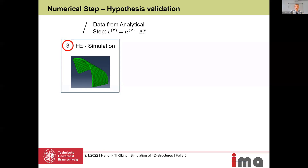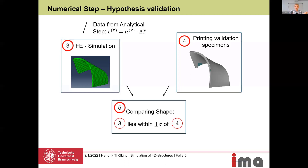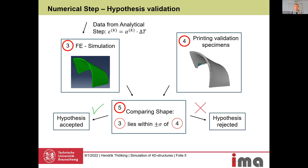In our research, we printed validation specimens to assess the approach using the same printer, same material, and same activation used for the simple bending bodies in the first step. We then compared both shapes. The hypothesis of our research is that the curvature of the simulated shape lies within the standard deviation of the curvatures from the printed validation specimens. If true, we accept the hypothesis; if not, we reject it.